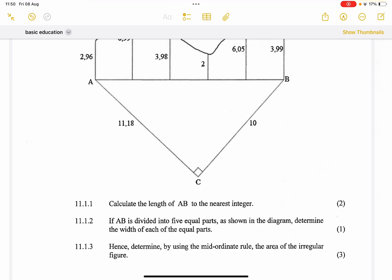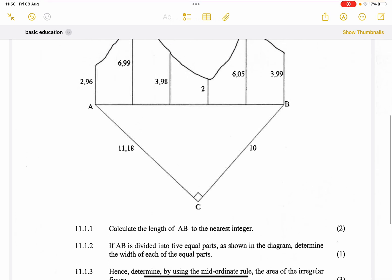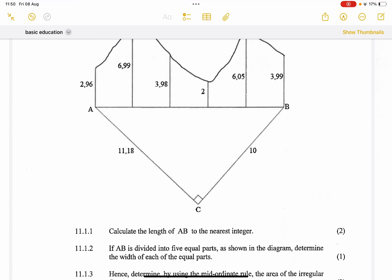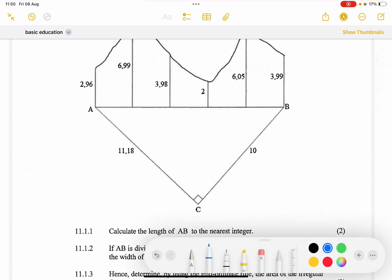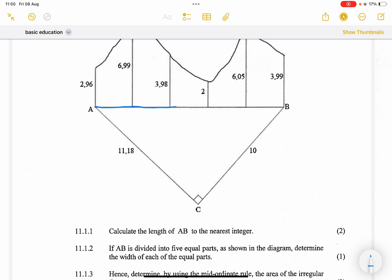Firstly, they say to us, calculate the length of AB to the nearest integer. So we're looking for the length of that side there, which is AB. Let's go for it. So remember that this is a 90 degree triangle, so that means that's the hypotenuse, it's opposite our 90 degree angle.